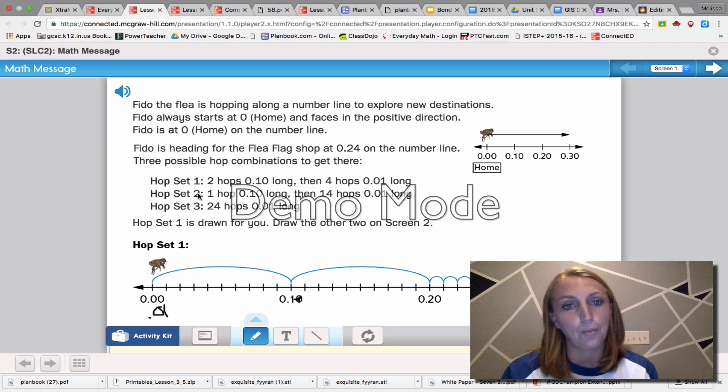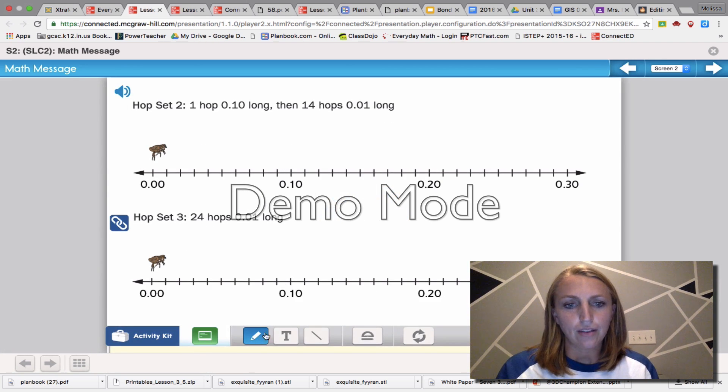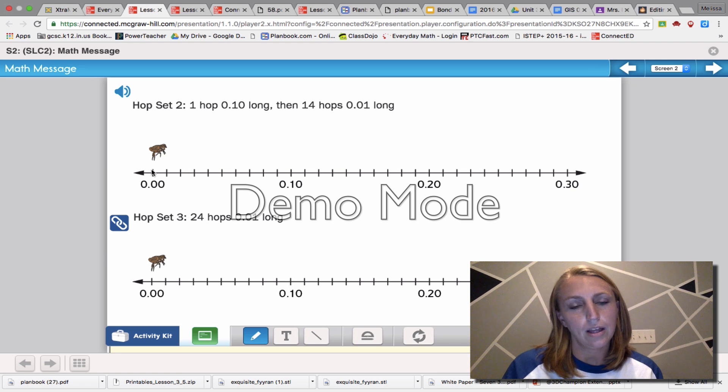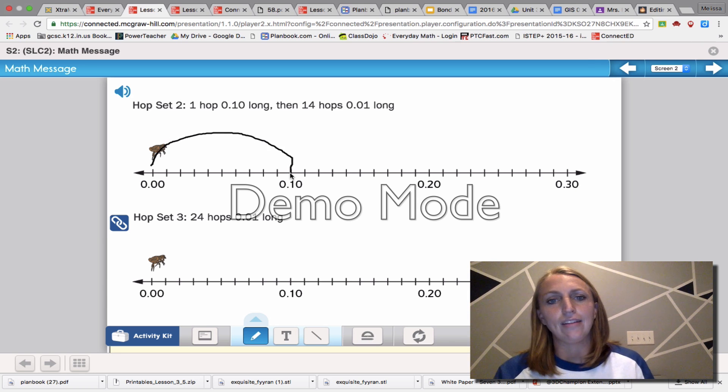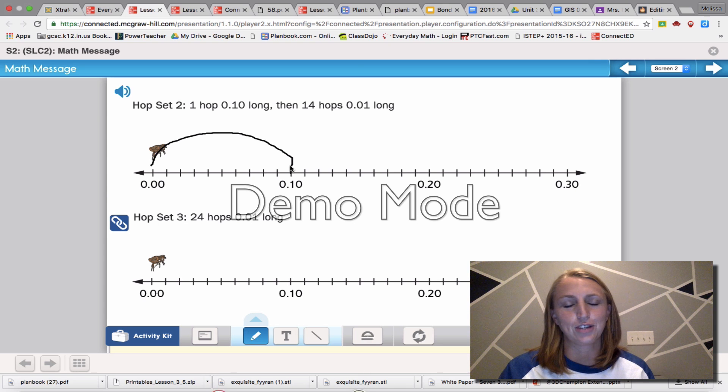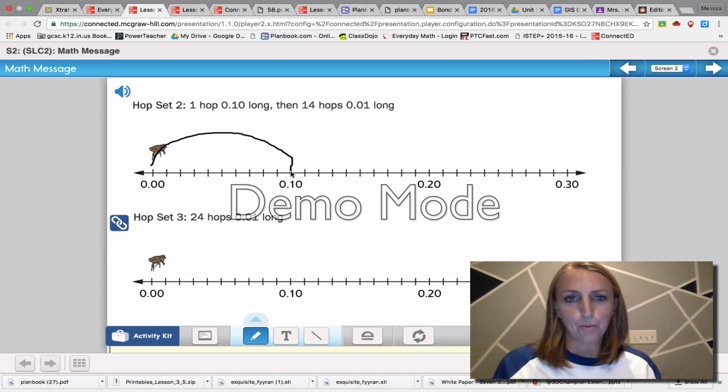So let's go on to the next one. Now we're going to have to remember one hop at one tenth long, and then fourteen hops at one one hundredth long. So give it your page. We are going to draw them together. So we said one hop, one hop for Fido. And then fourteen hops that are one one hundredths.